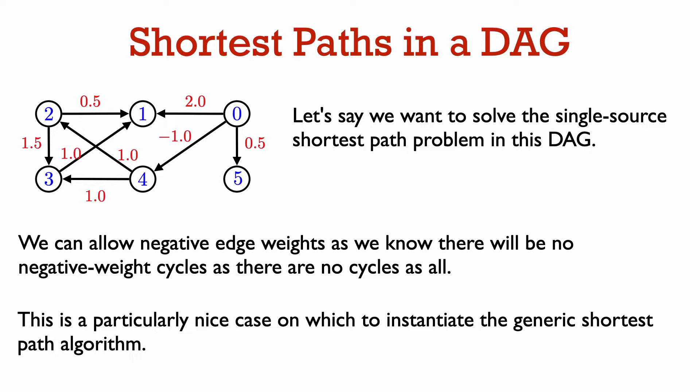In this case, it is fine to allow negative weights. We still know there will be no negative weight cycles since there are no cycles at all. A DAG is a particularly nice case on which to instantiate our generic algorithm.